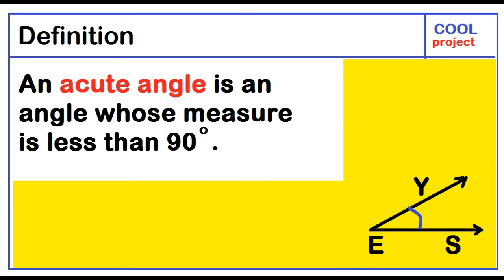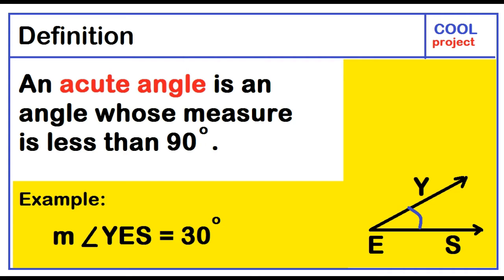An acute angle is an angle whose measure is less than 90 degrees. Example: the measure of angle YES equals 30 degrees.